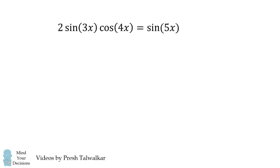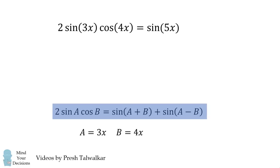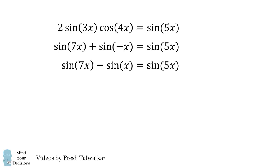From here, we can simplify the equation using the product to sum formula. We'll let A equal 3X, and we'll let B be equal to 4X. We substitute these values into the product to sum formula, and we simplify to sine of 7X plus sine of negative X is equal to sine of 5X. Sine of negative X will be equal to negative sine of X. We can then rearrange this equation to solve for sine of X.